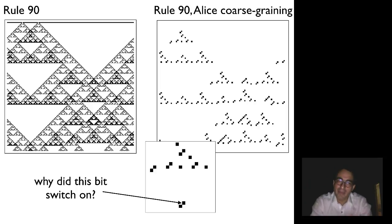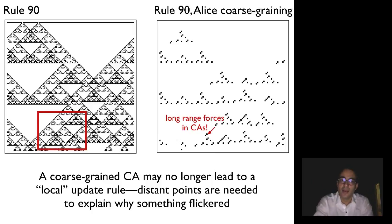The only problem is, and maybe you can see this from how rule 90 looks at the fine-grained level, is that I can make those colliding, appearing triangles arbitrarily far apart. I can create an arbitrary distance between the dense intersections of triangles at one stage, and the dense intersections of triangles at another stage, just by changing the initial conditions. Another way to say that is that a coarse-grained cellular automata may no longer have a local update rule, no matter how far I zoom out.